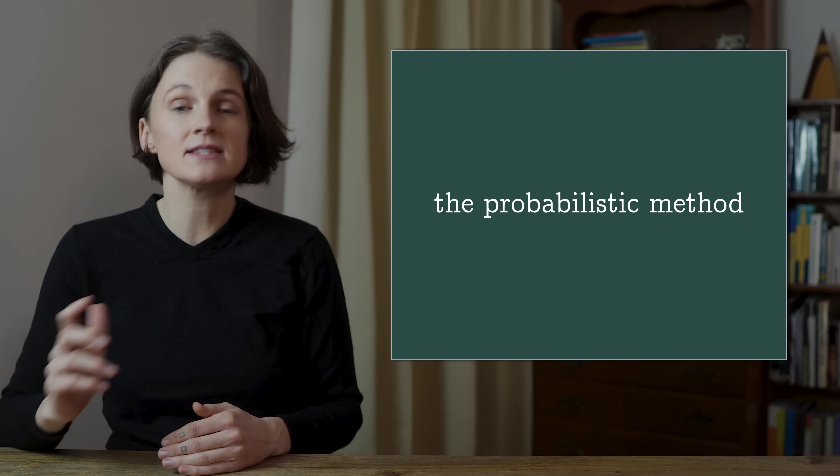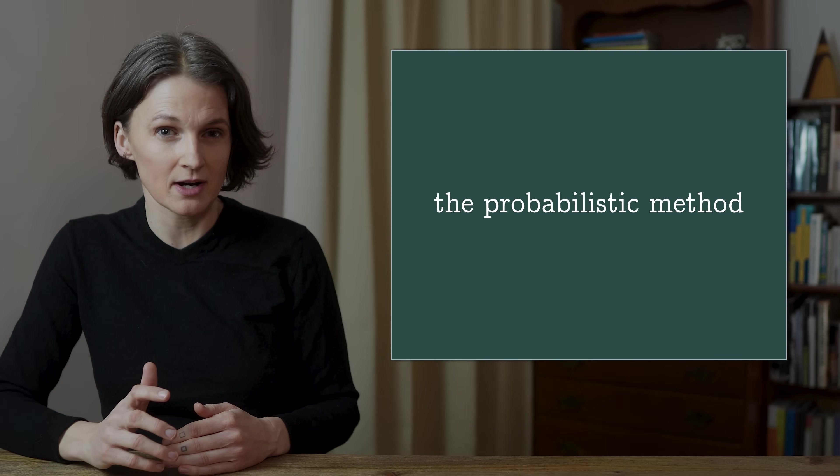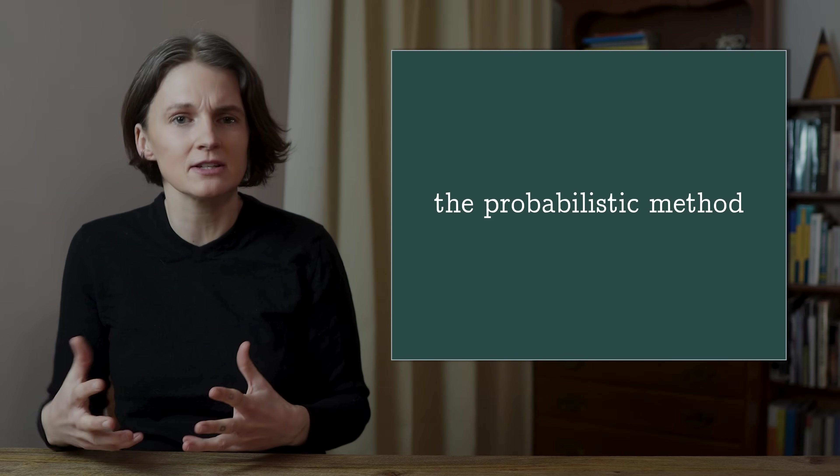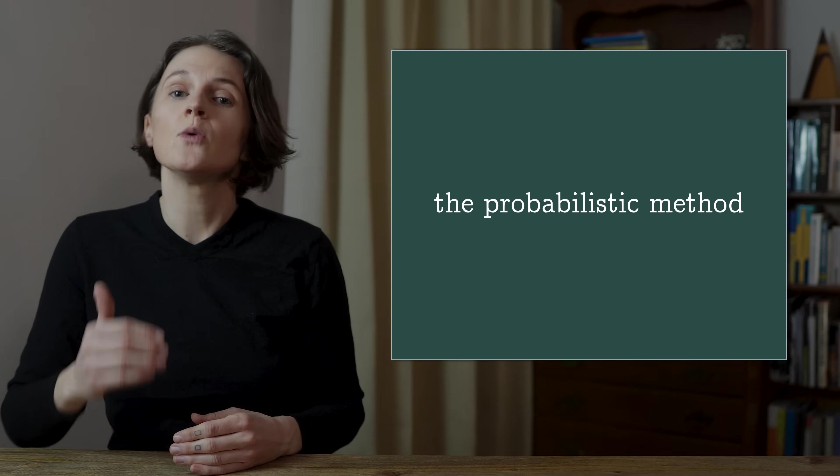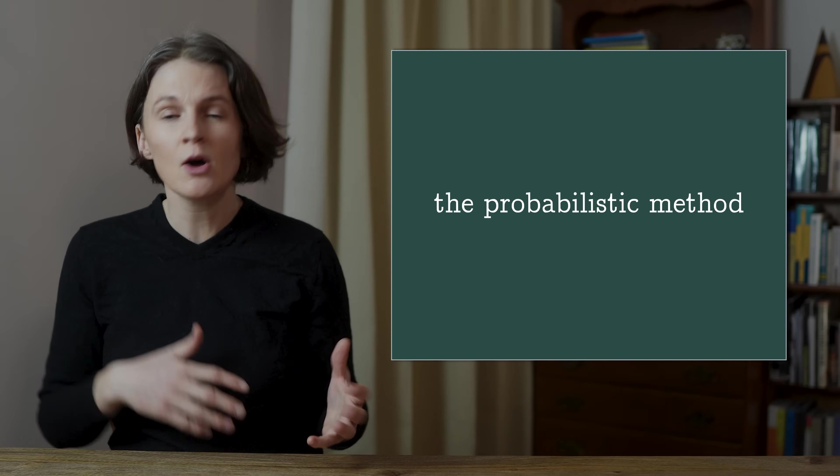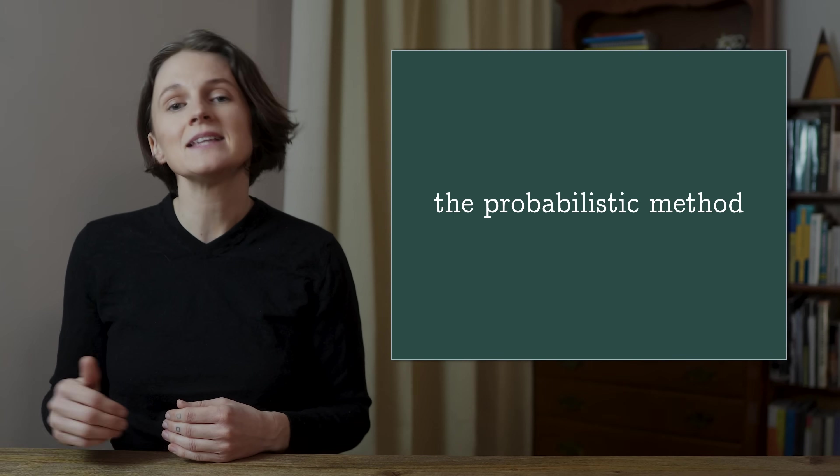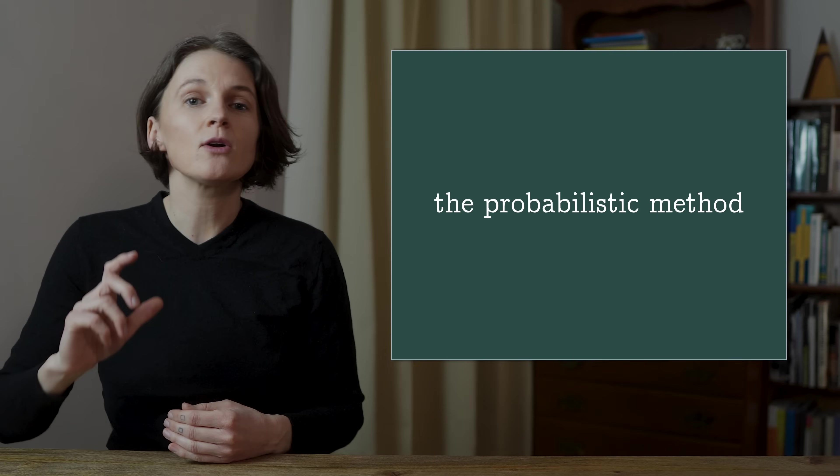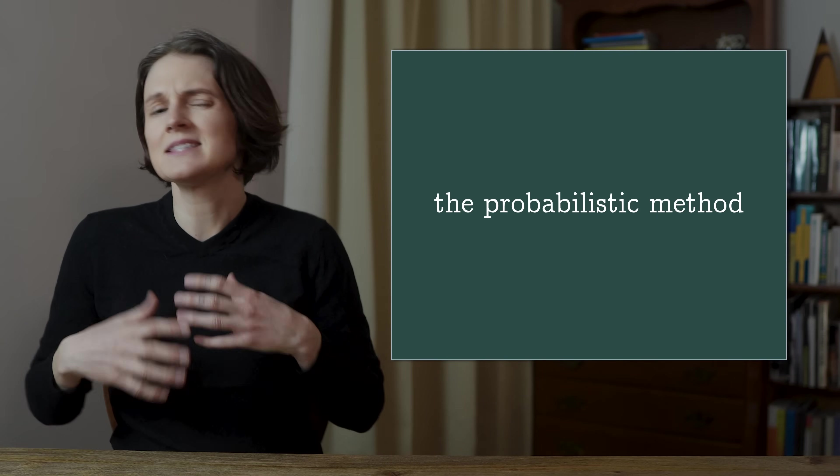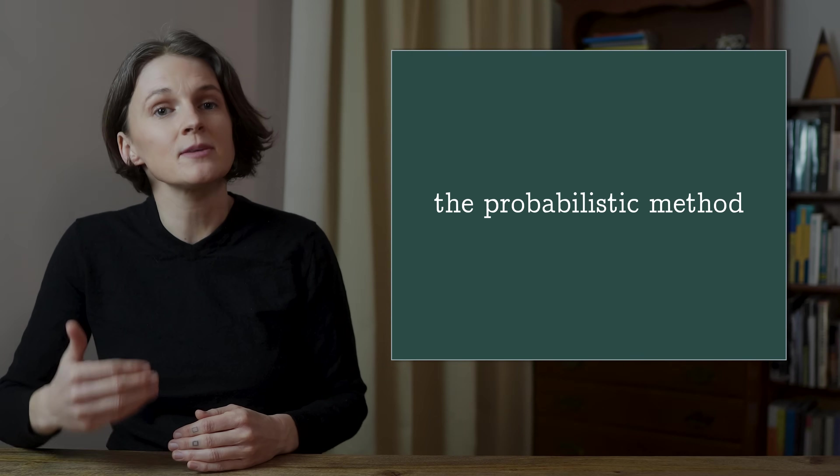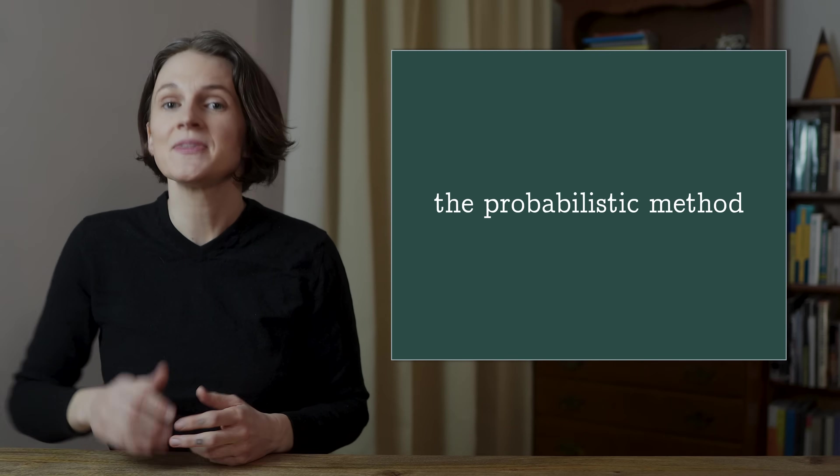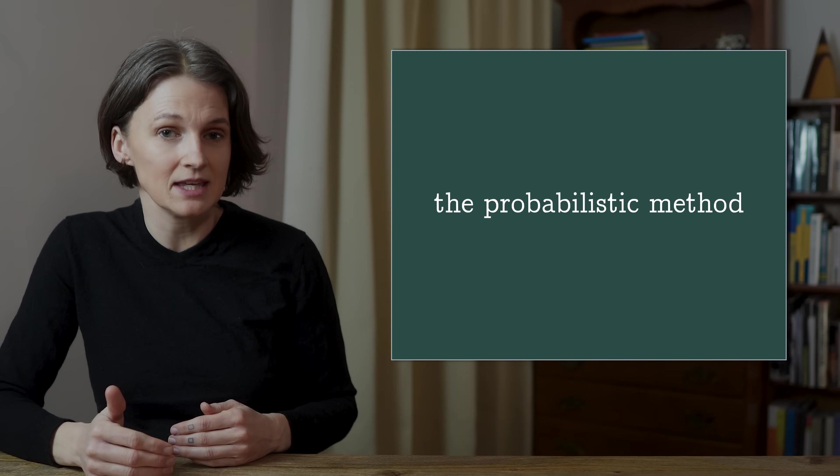The probabilistic method is an important technique in combinatorics. It's kind of a surprising twist, like tilting your head and seeing something familiar from a new perspective. When you encounter a question about uncertainty, the outcome of a sports game, or the roll of a die, it's natural to think in probabilities. But our original question wasn't about uncertainty or likelihood. It's a definite question about whether something is possible, whether an object exists in the mathematical sense, and yet probability was the key to answering it.